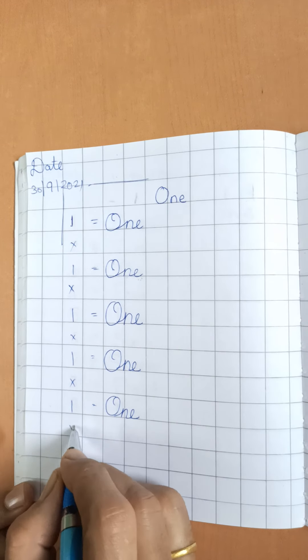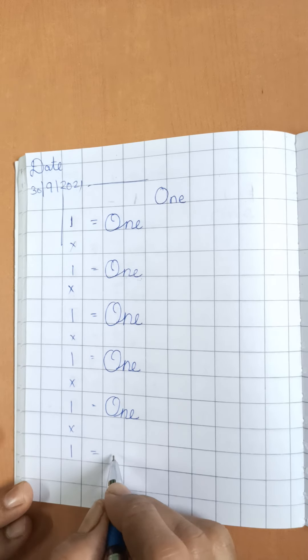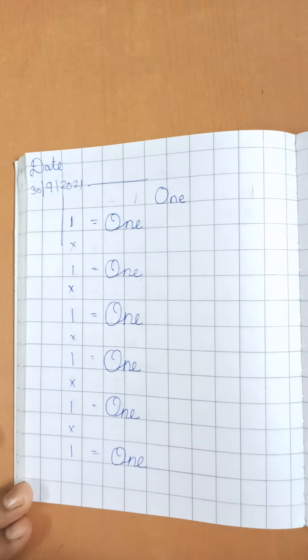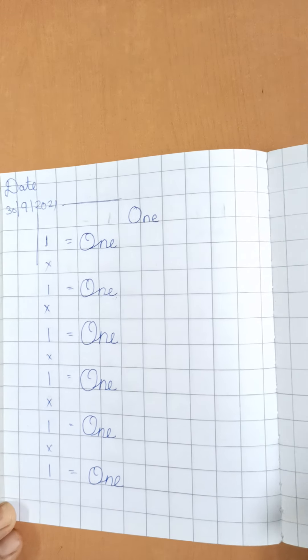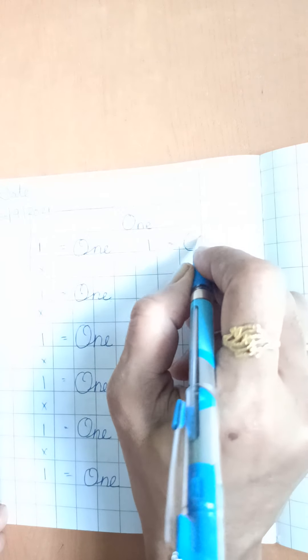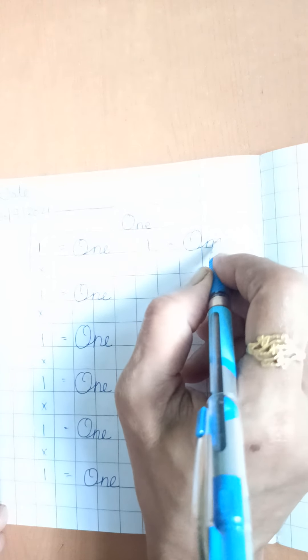Then again, 1 is equal to O, N, E, 1. In this way. So, 1 is equal to O, N, E, 1.